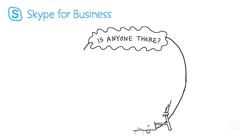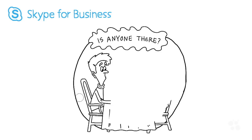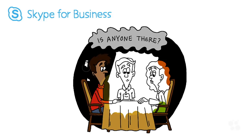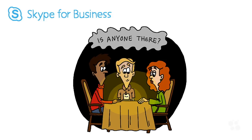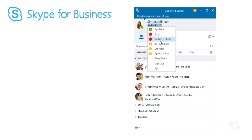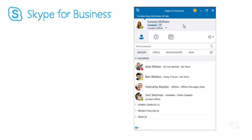So with Skype for Business, we can see whether a co-worker is online right now with what Microsoft refers to as presence — which always makes me laugh a little bit, because this term seems to conjure up the idea of calling the spirit world. Is there anybody out there? But what it actually means is that we get to see whether the co-worker we want to communicate with is online and available, shown by these coloured blobs.